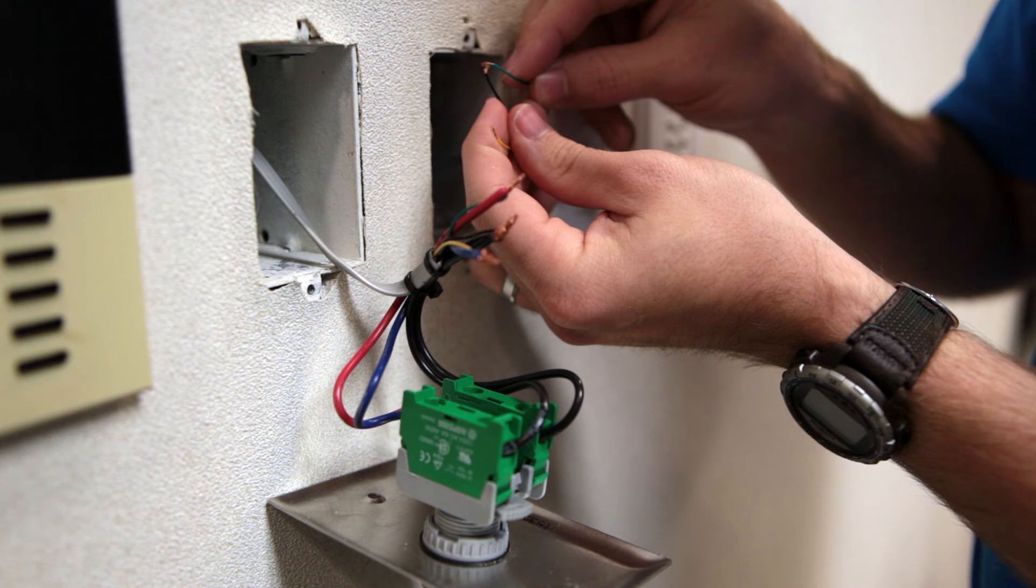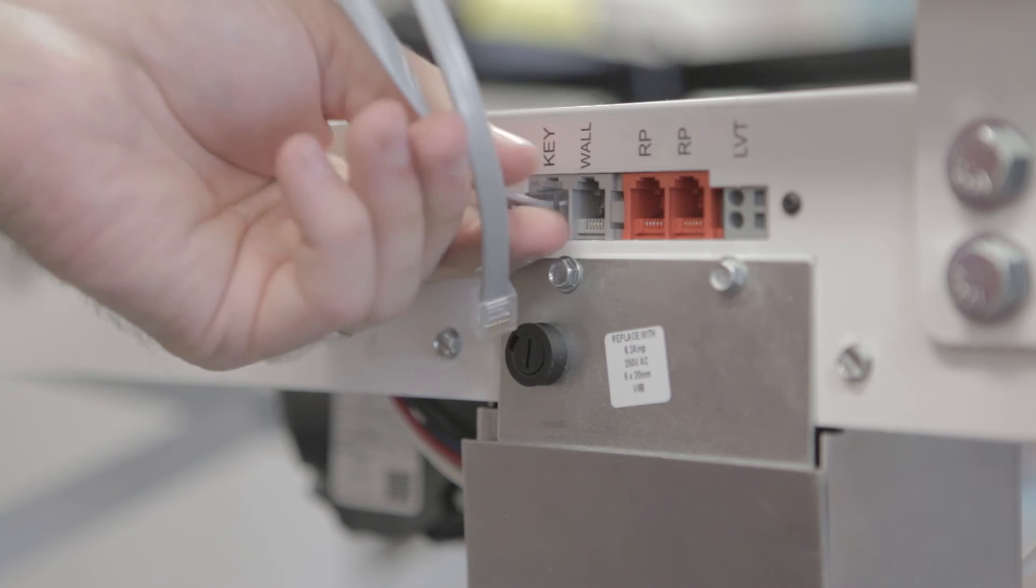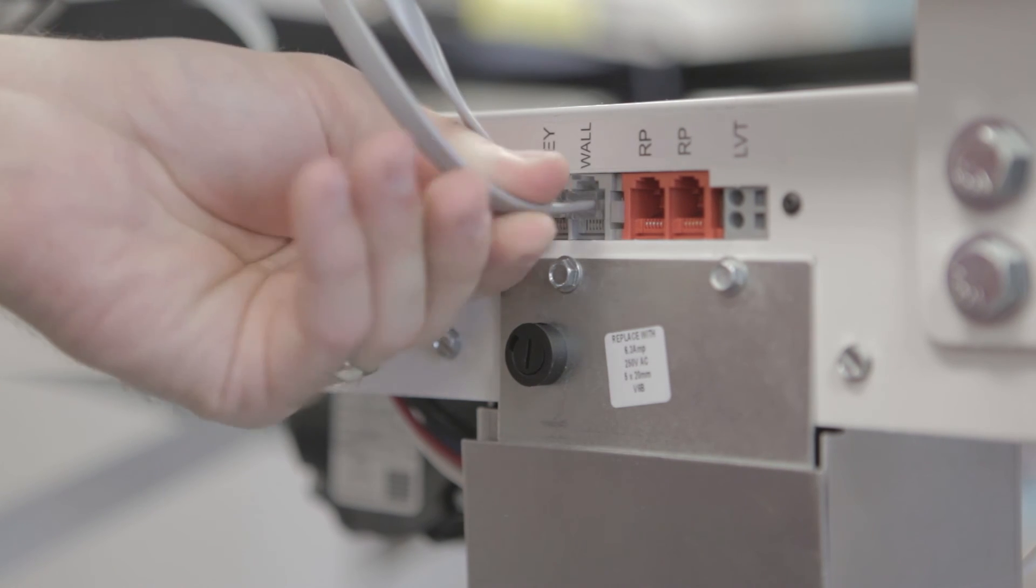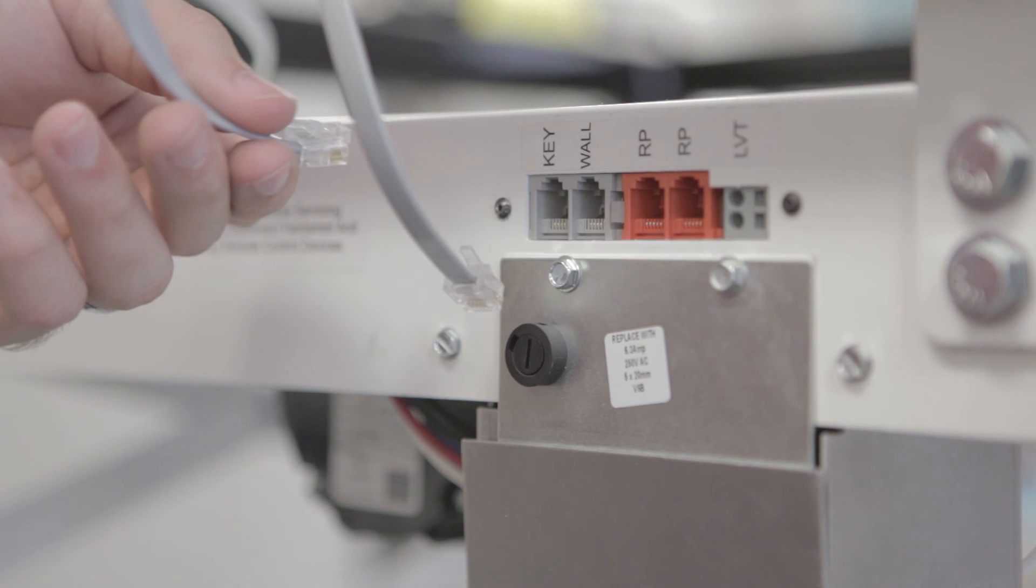If you have one working wall switch and one non working wall switch, try removing the data cable from the working wall switch and replace the data cable from the non working wall switch. If this causes the switch to start working, the problem was a defective data cable.